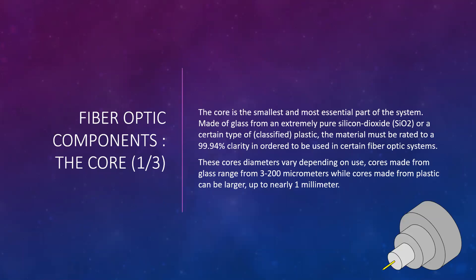Now, fiber optic components: the core is the smallest and most essential part of the system. Most of the time it is made of extremely pure silicon dioxide (SiO₂) — and I mean extremely pure — or a certain type of classified plastic, which I currently work on at Syntec Optics, though I'm not at liberty to say what kind of molding we use. Both materials must be rated to 99.94% clarity to be used in certain military and civil fiber optic systems. This clarity requirement can vary depending on whether it is for private, corporate, or medical use — medical uses often require higher clarity.